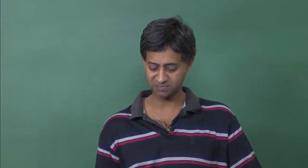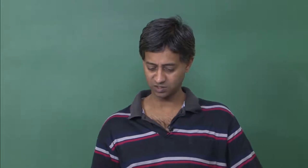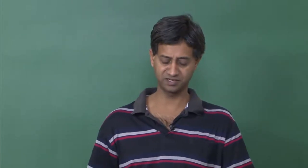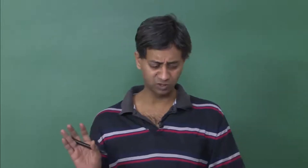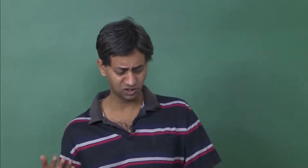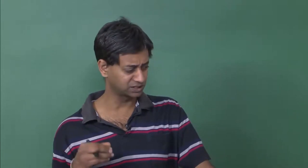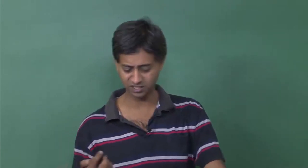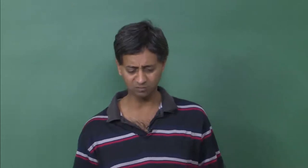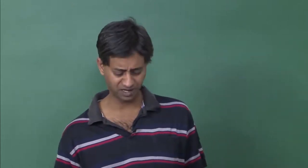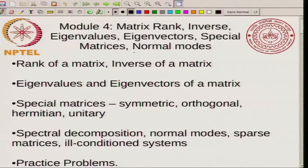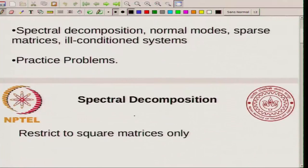In the last class we learnt about special matrices. We saw symmetric, orthogonal, hermitian and unitary matrices. And we briefly talked about things called similarity transformations. Today I am going to talk about spectral decomposition, matrix diagonalization, normal modes, and then a few other things about matrices.